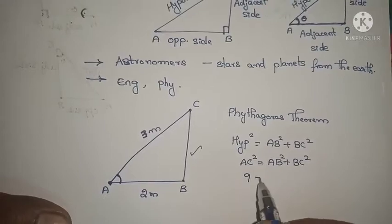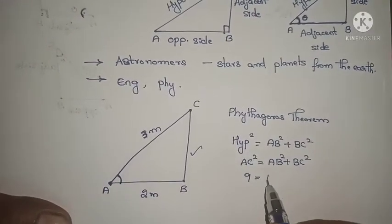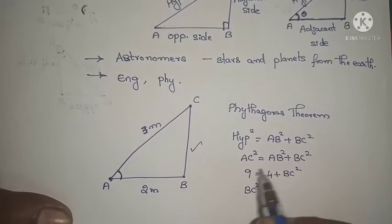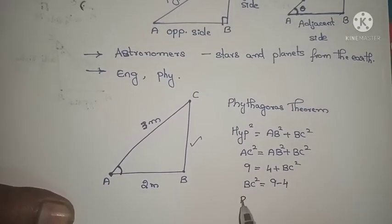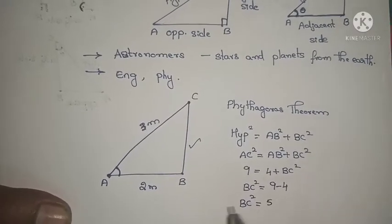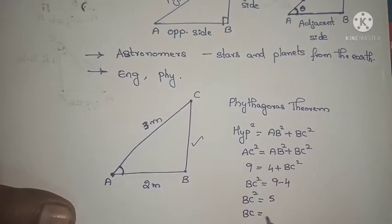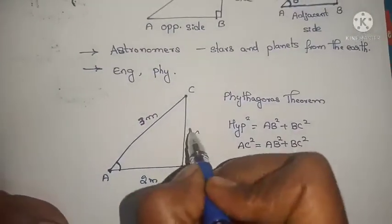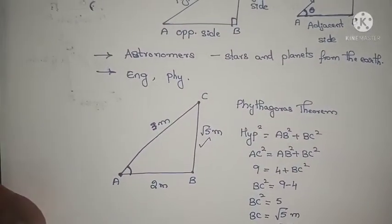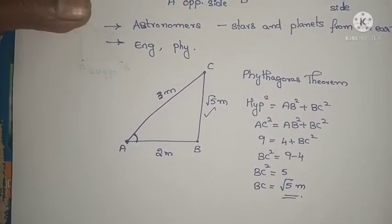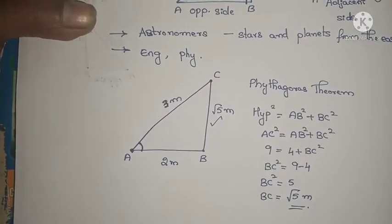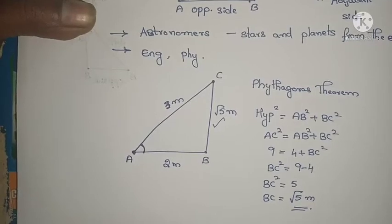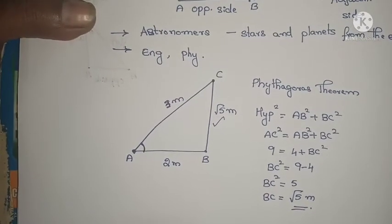AC² = 3² = 9. AB² = 2² = 4, plus BC². I want BC², so 9 minus 4 gives BC² = 5, and BC = √5 meters. This is the way we can find the heights of buildings. By trigonometry we can find heights of buildings, width of rivers, and when a kite is flying in the sky we can know the distance from our place. So trigonometry is used in our daily life.